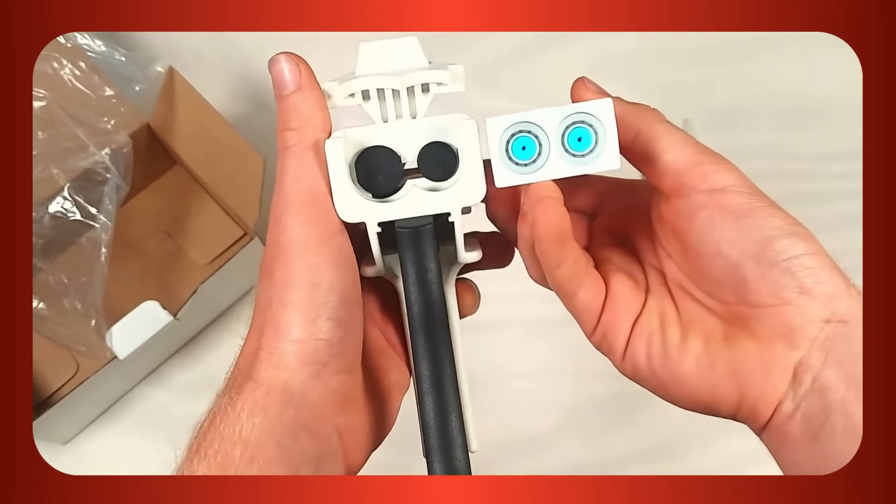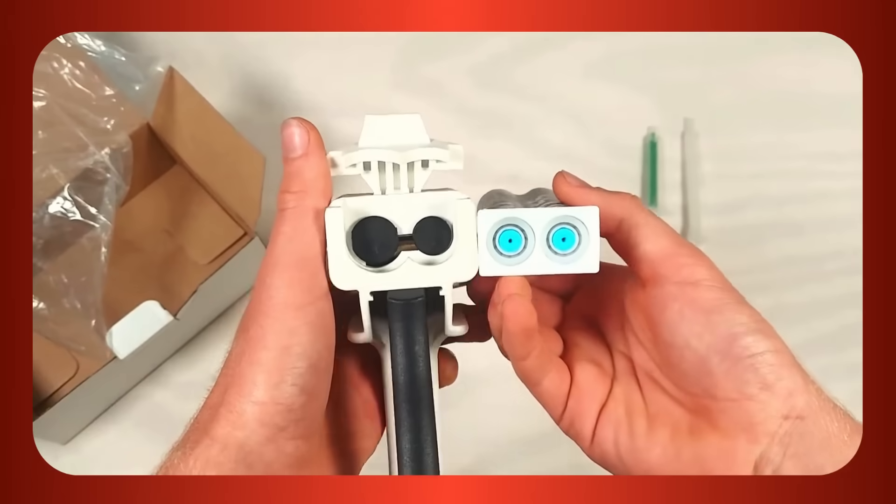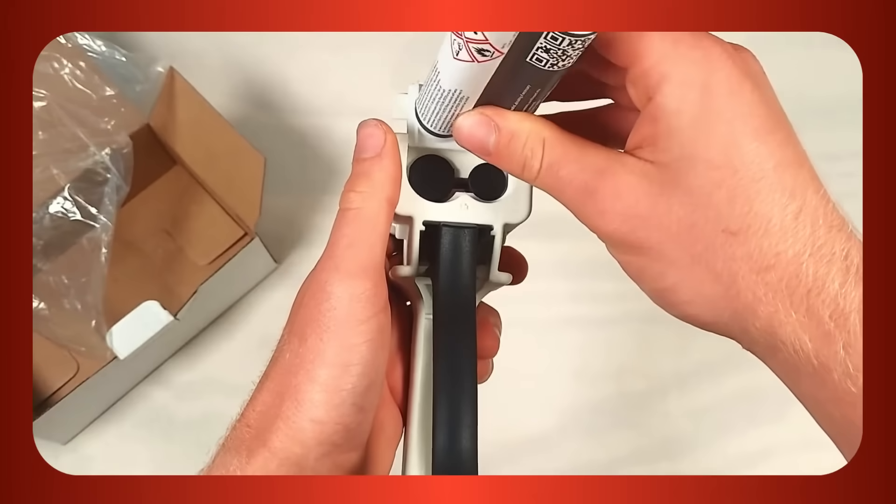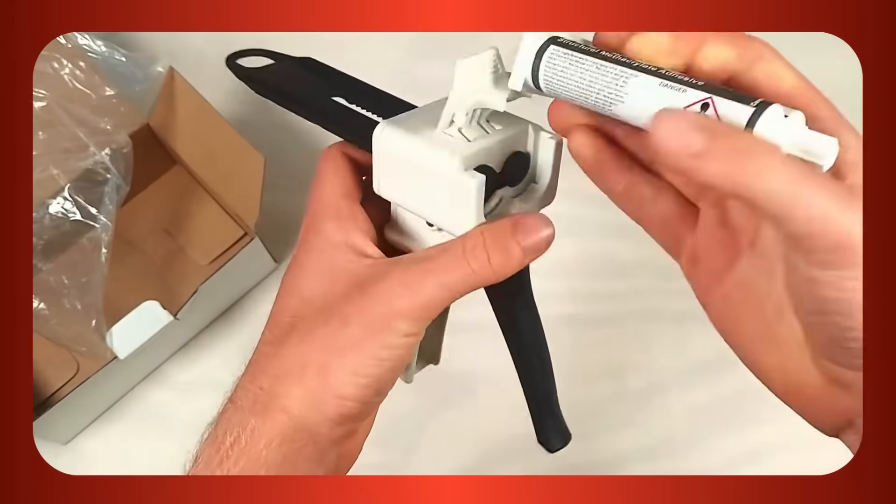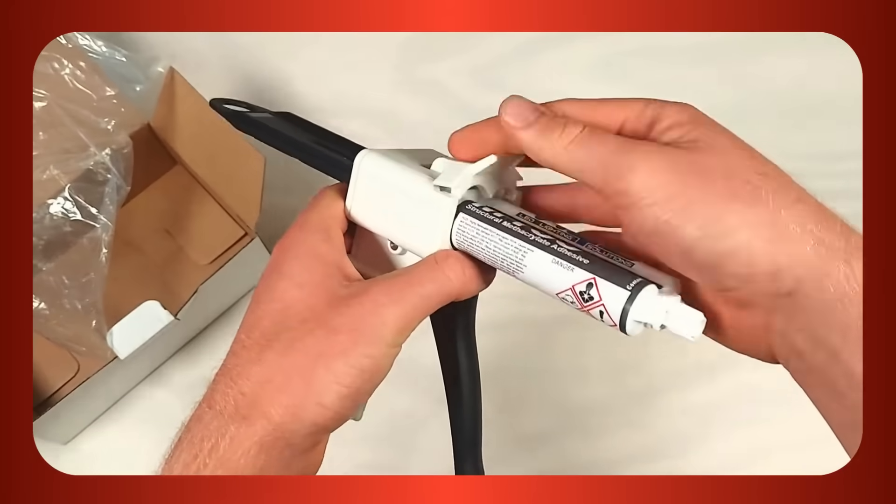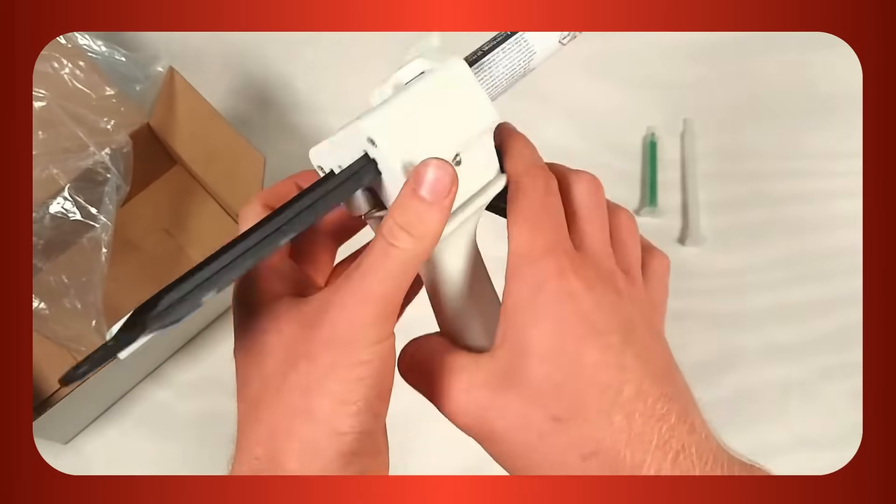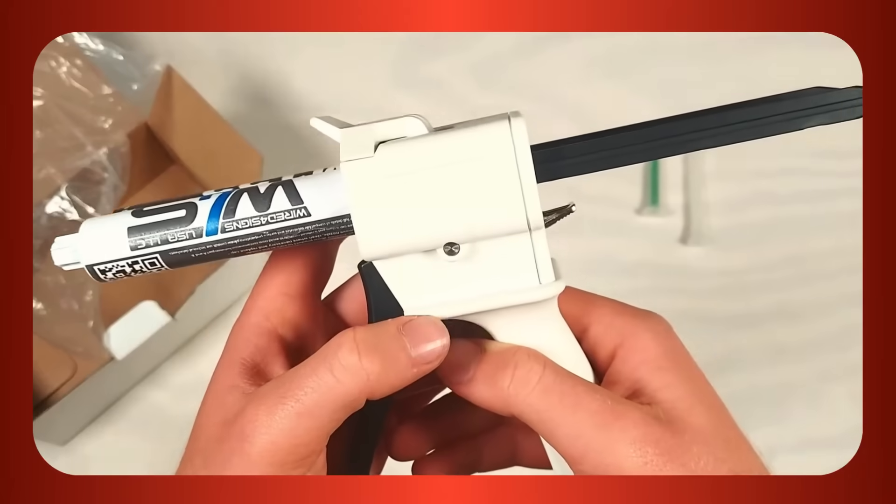Push the glue canister into the slot. If we were using two-to-one adhesive, we would need to make sure our canister was oriented the correct way. If you're finding this hard, make sure that the actuator is pushed all the way in.